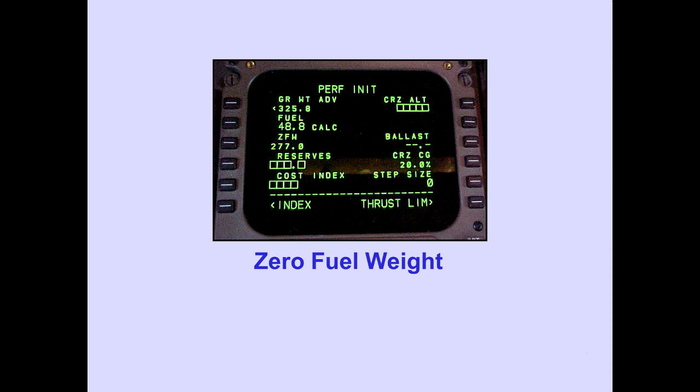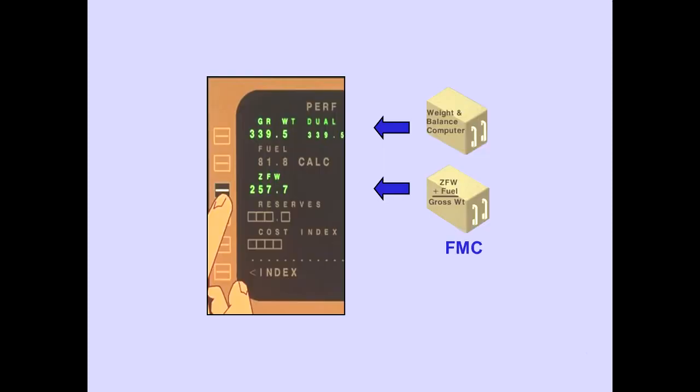The flight crew shall enter the zero fuel weight and read the FMC gross weight. Both pilots will compare the FMC calculations and weight and balance form calculations to confirm the weights are reasonable and to verify no limits are exceeded. In this example, a zero fuel weight of 257.7 was entered, and the gross weight of 339.5 was automatically calculated by the FMC.